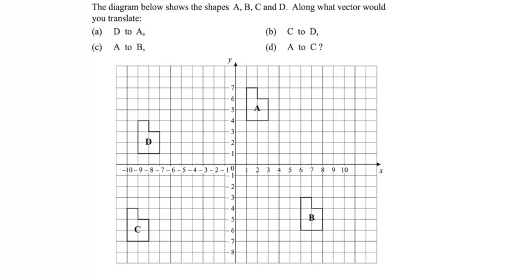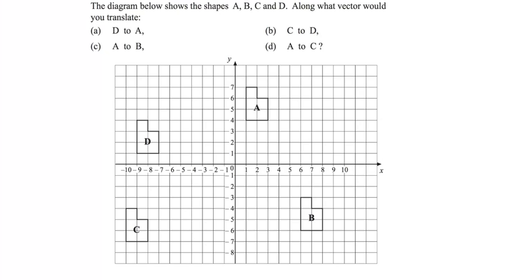So let's just take a look at a nice example here. It says the diagram below shows the shapes A, B, C, and D. And along what vector would you translate D to A? So we're going to just focus on a couple of these, D to A. So let's just pick any particular point, and let's have this one here perhaps, and we can see in A we've got it over here. So what we've got to do is we've got to count how far to the right it goes and how far up it goes, and that's going to give us our solution for the description of this column vector.